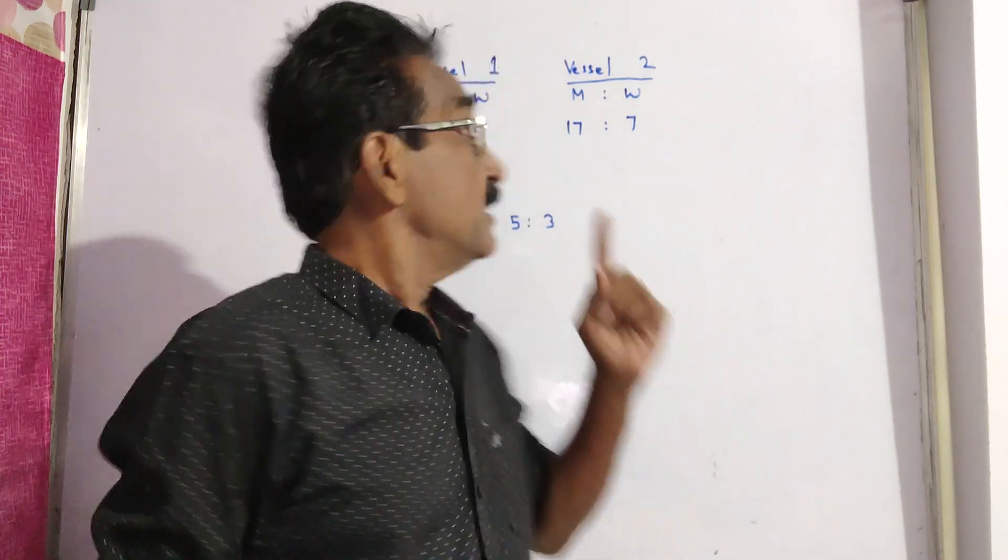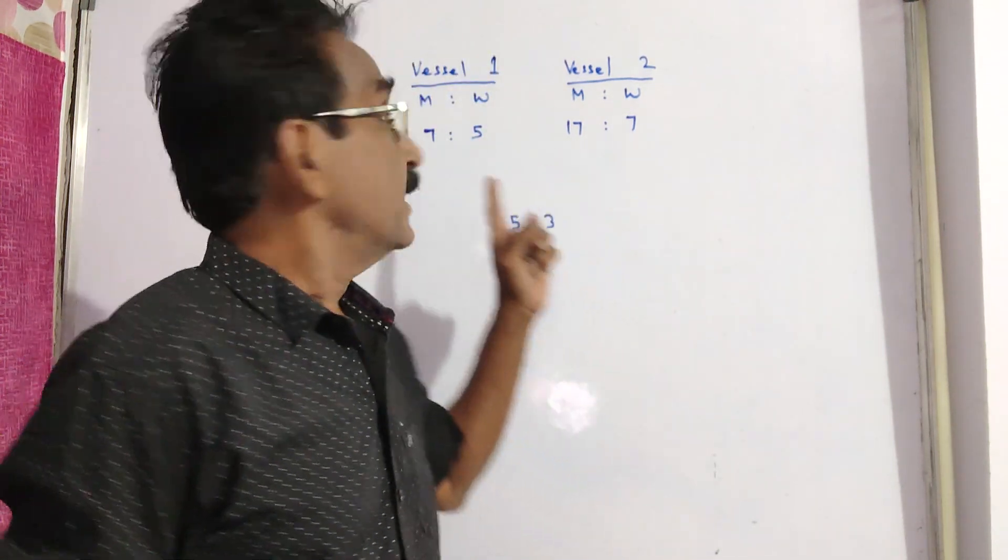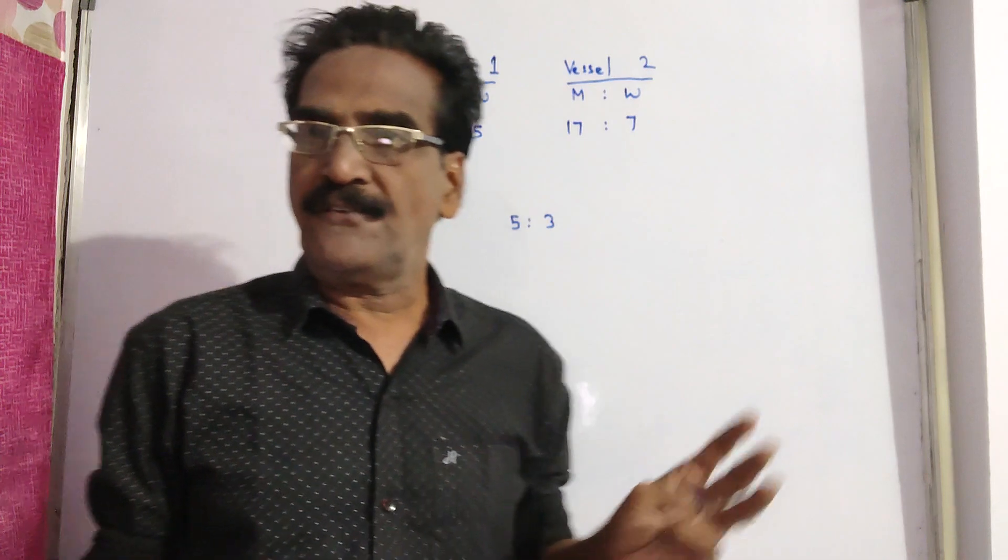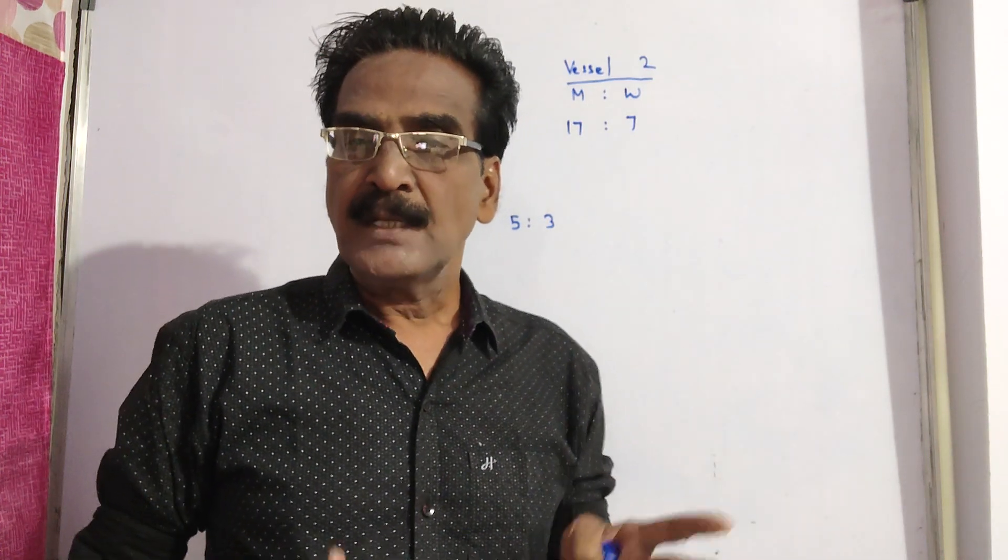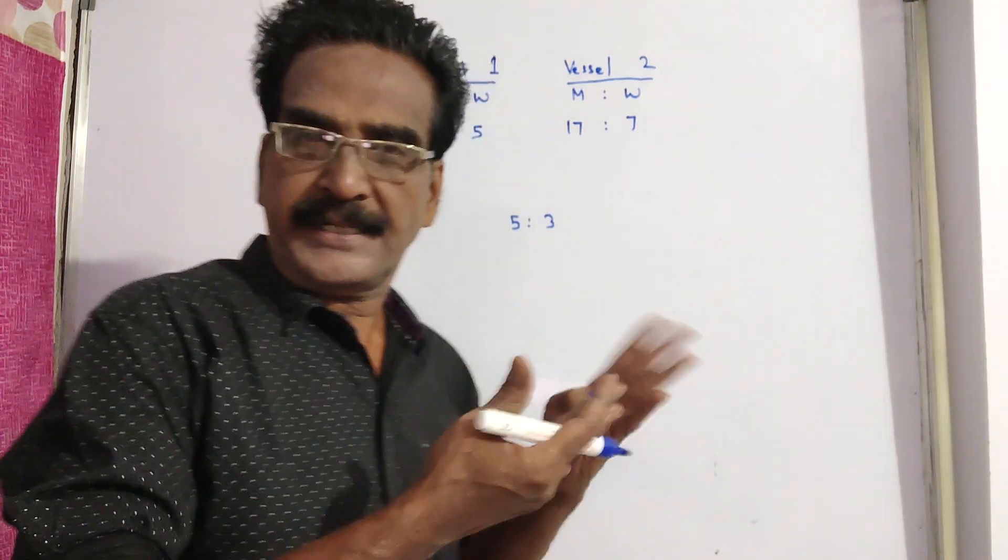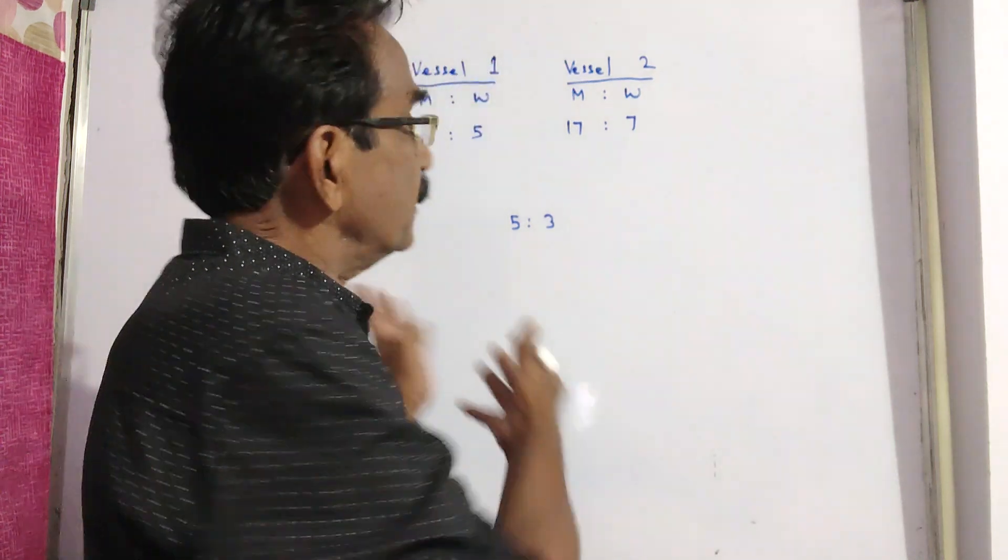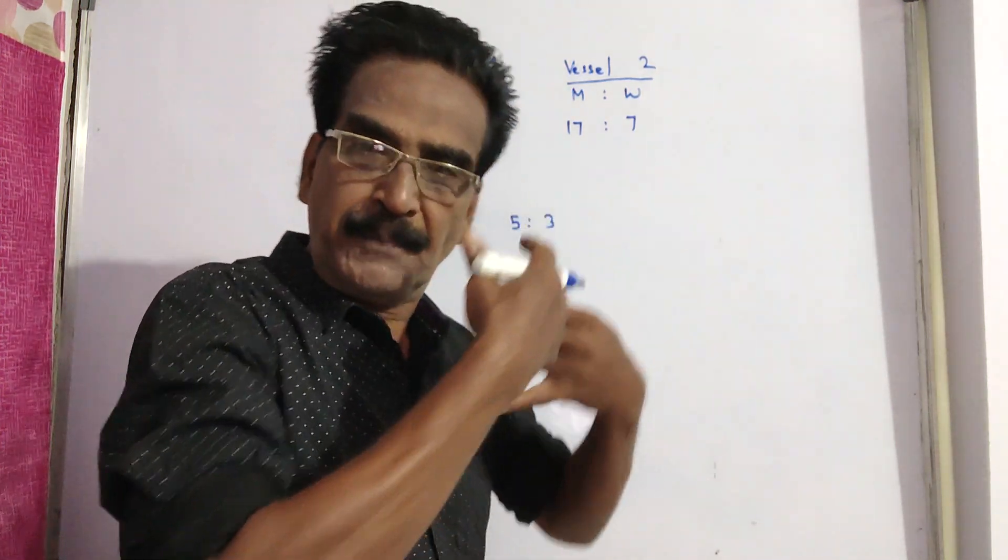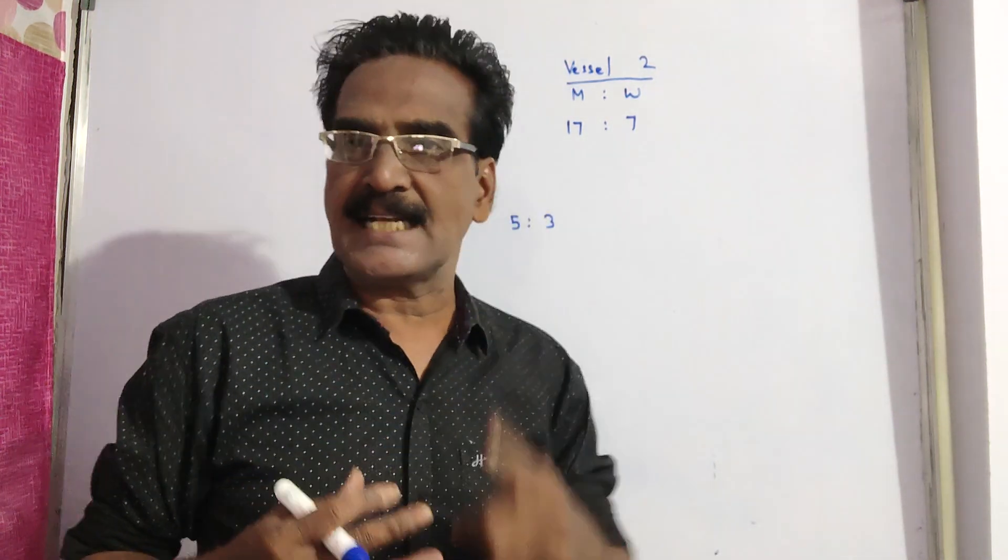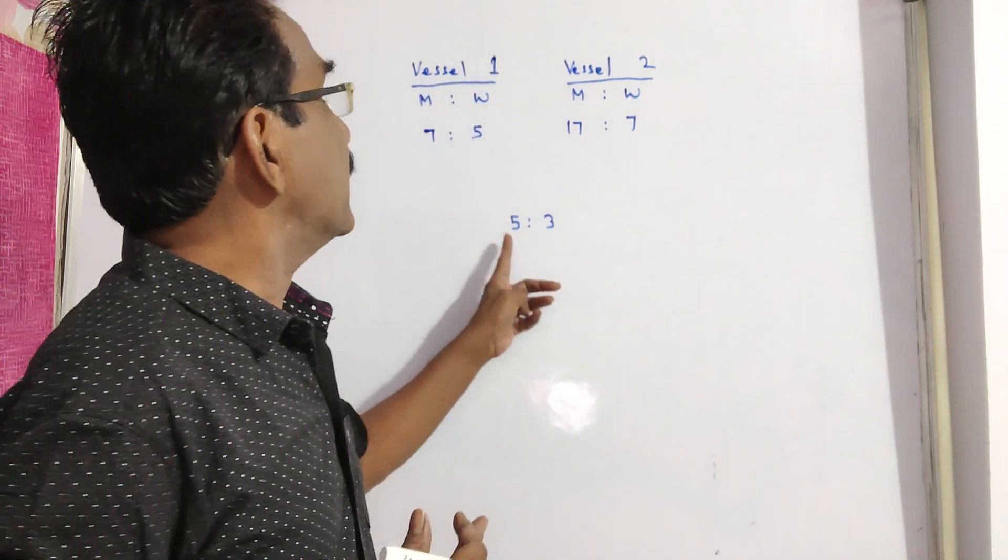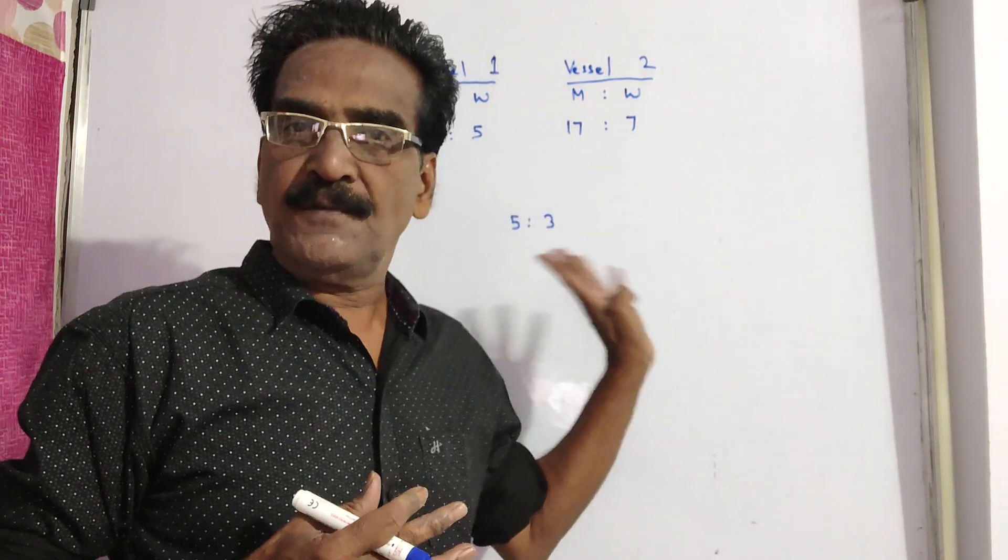Friends, two vessels contain milk and water in the ratio 7 is to 5 and 17 is to 7. The question is, in what ratio these two mixtures should be mixed to get a resultant mixture of milk and water 5 is to 3.